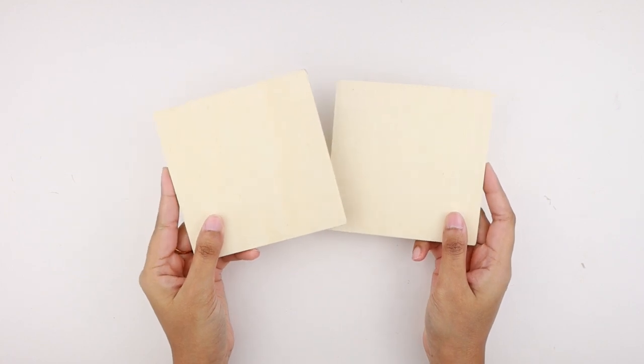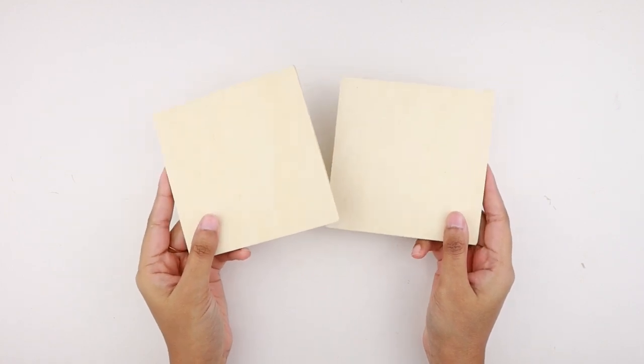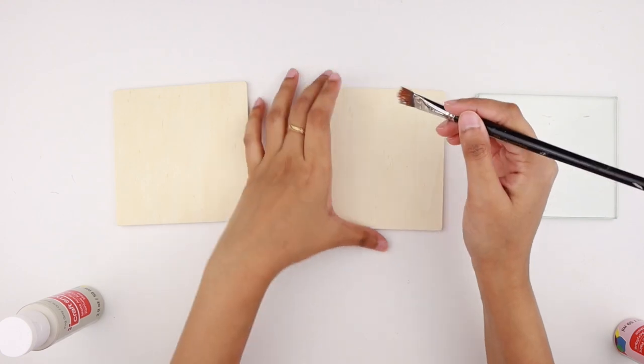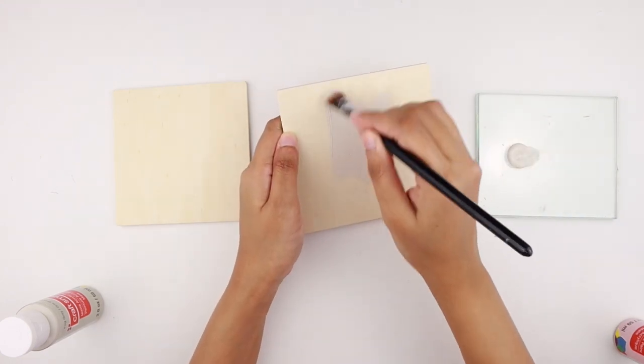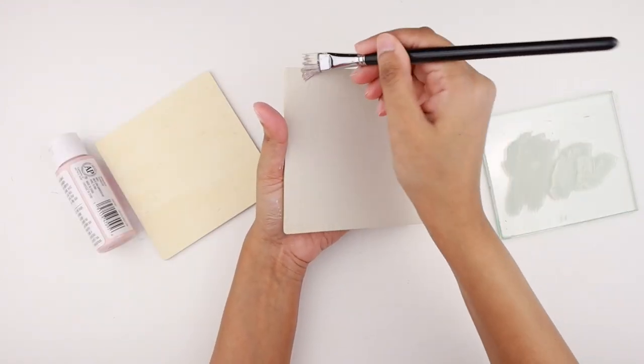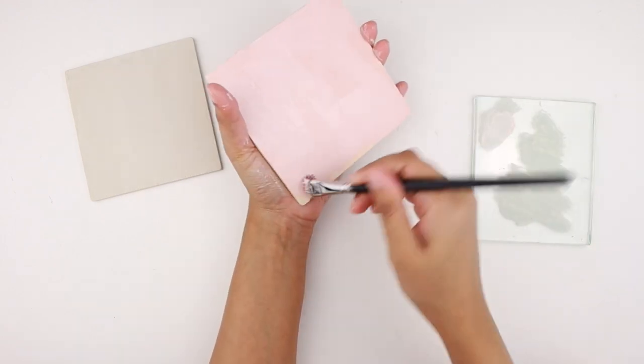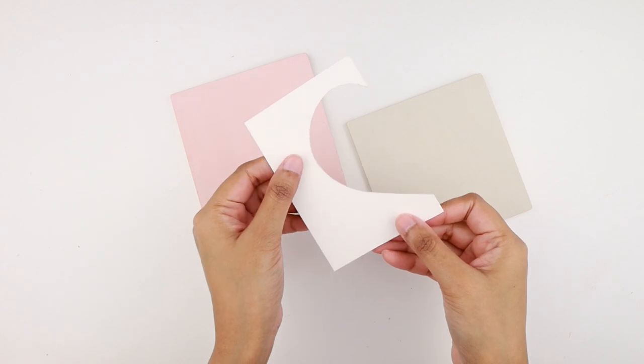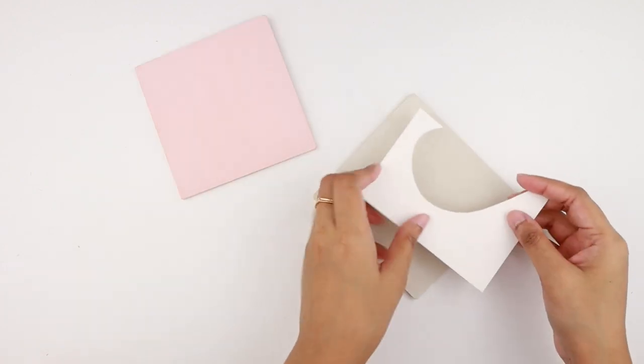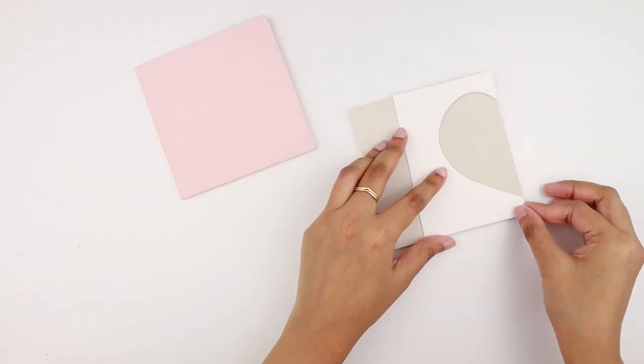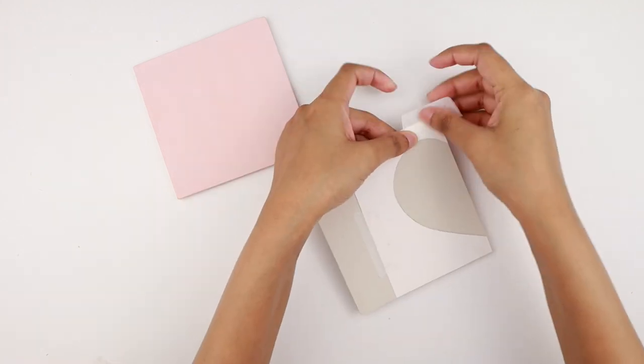To make the coasters, I used two 4.5 by 4.5 inches wooden square pieces. I painted one of these with light gray acrylic paint. For the other coaster, I used this light pink paint. I cut out a piece of cardstock to make a half heart stencil. I placed the stencil on one of the sides of the coaster and taped it down to hold it in place.